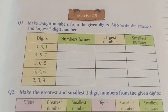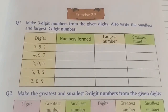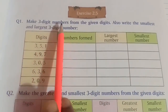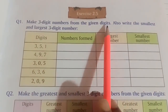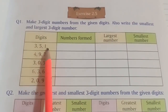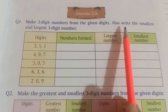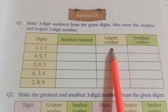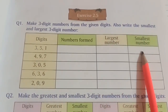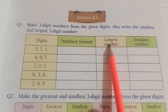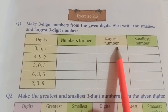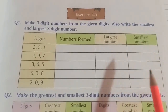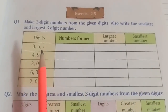Good morning dear children, today we are continuing chapter 2 and we will do exercise 2.5. The first question is: make three-digit numbers from the given digits. We have to form three-digit numbers, write the largest three-digit number and the smallest three-digit number. Note that largest number and greatest number are the same, and smallest number and least number are the same.